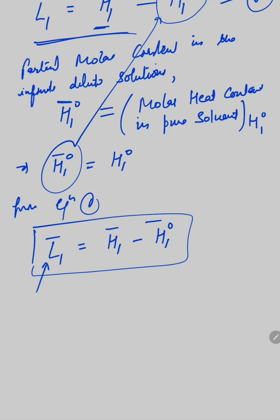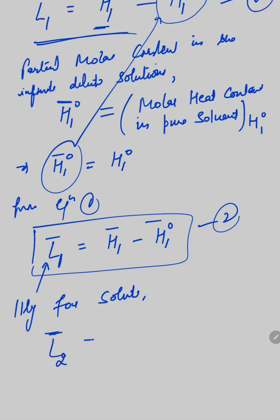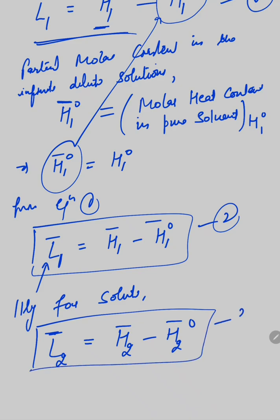Similarly, for the solute we can find the relative partial molar heat content, given by the same form as equation 2: L̄2 = H̄2 − H̄2°. These are the relative partial molar heat contents of the components. If H̄1 or H1° are known, we can easily calculate the relative partial molar heat contents of the system.